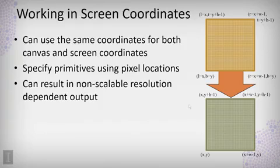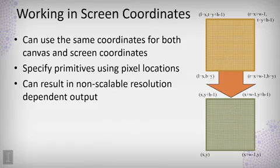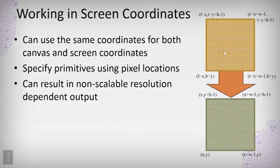You can also work directly in screen coordinates by setting up a canvas-to-screen transformation that uses canvas coordinates matching your screen coordinates — setting the left and bottom edges to (x, y) and the right and top edges to (x + width - 1, y + height - 1). In this case you can specify the coordinates of your primitives in vector graphics using the same coordinates as the pixels they will be translated to.